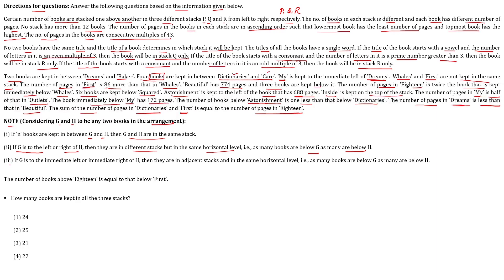If G is to the immediate left or immediate right of H, then they are in adjacent stacks and in the same horizontal level, with as many books below G as below H. These are the key rules. Also, the number of books above 18 is equal to that below First.